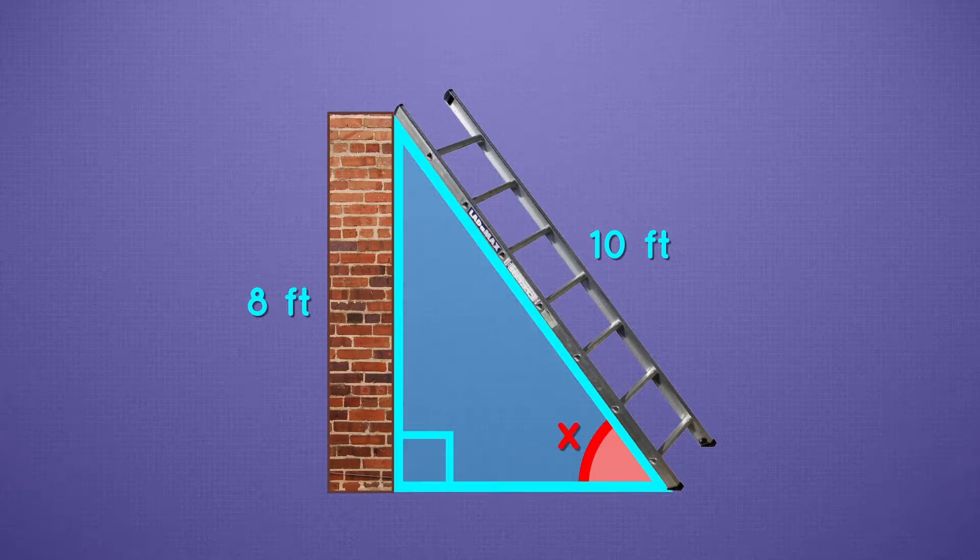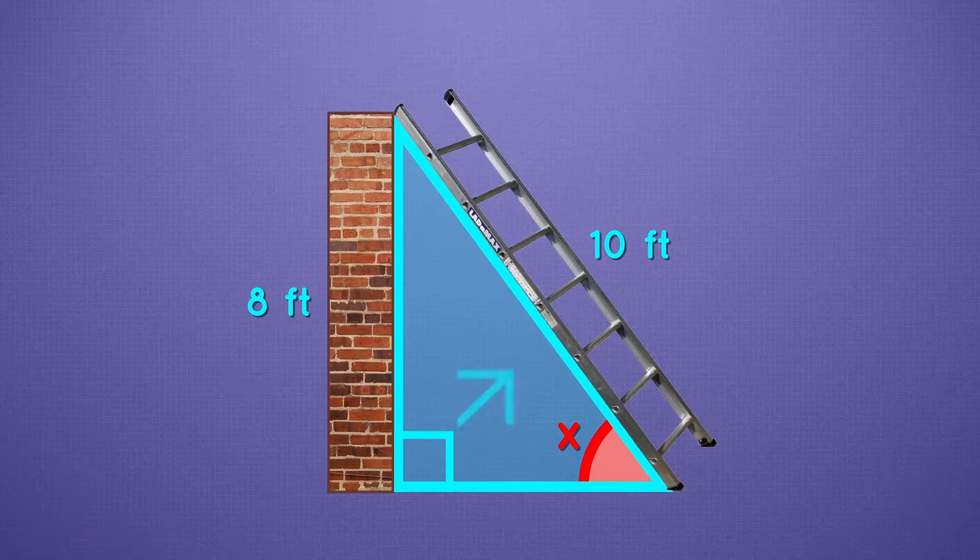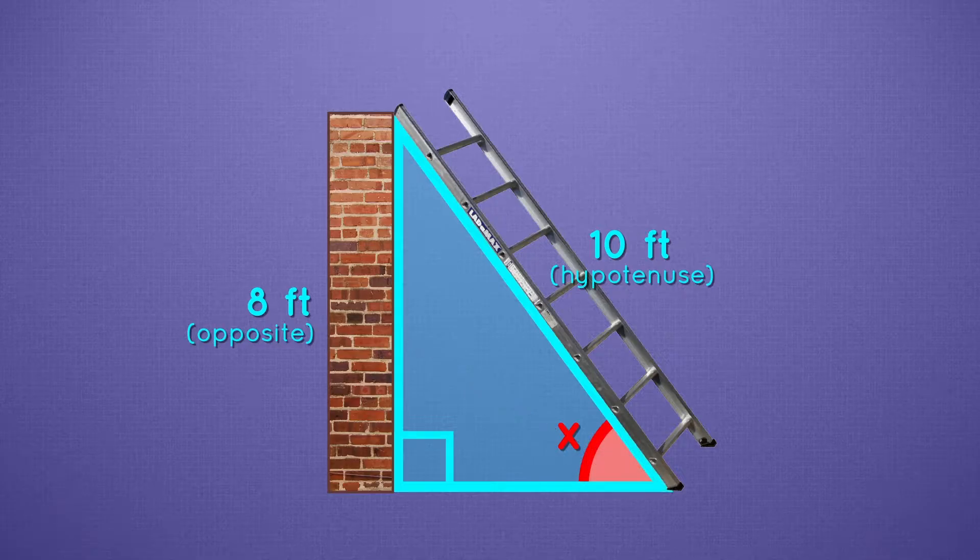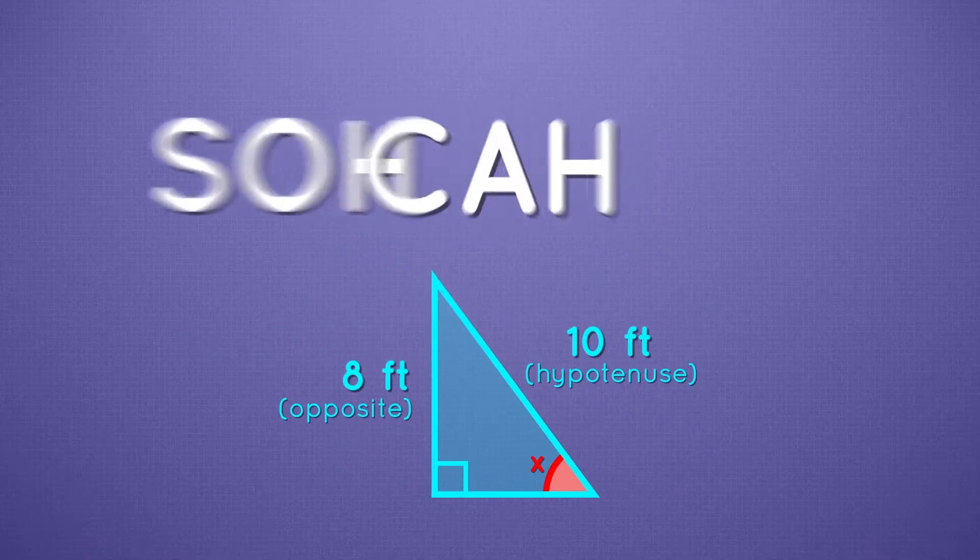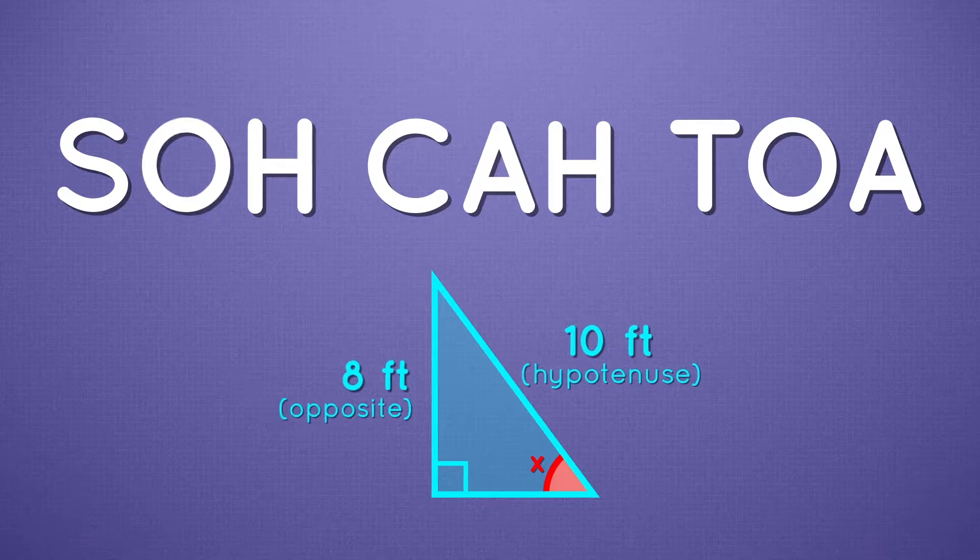So we have an angle to measure from, and two sides. This side, across from the right angle, is the hypotenuse. And this side is opposite our angle. So we have opposite and hypotenuse. Let's look to SOHCAHTOA. Opposite and hypotenuse. That means we use the sine function.